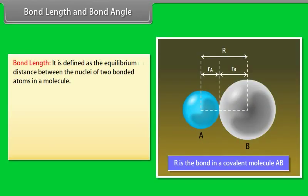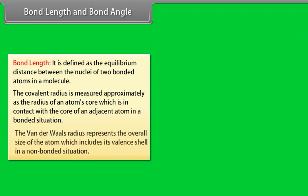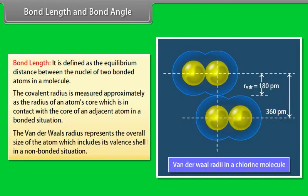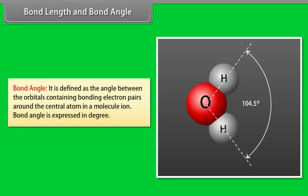Bond length is defined as the equilibrium distance between the nuclei of two bonded atoms in a molecule. The covalent radius is measured as the radius of an atom's core in contact with an adjacent atom in a bonded situation. The Van der Waals radius represents the overall size of the atom including its valency shell in a non-bonded situation. Bond angle is defined as the angle between the orbitals containing bonding electron pairs around the central atom in a molecule or ion, expressed in degrees.